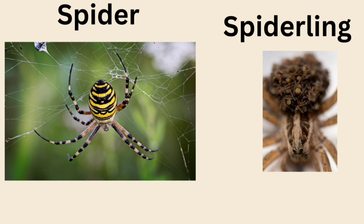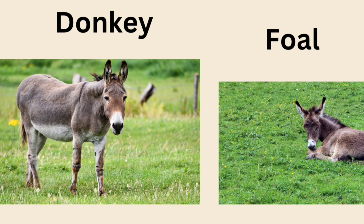Spider — young one is spiderling. Donkey — young one is foal.